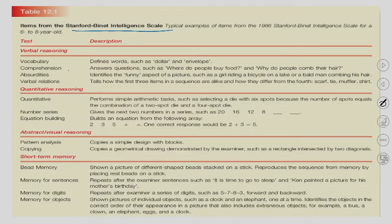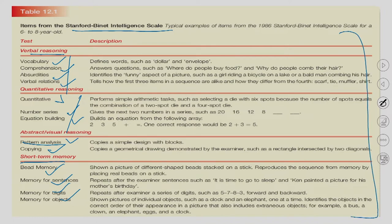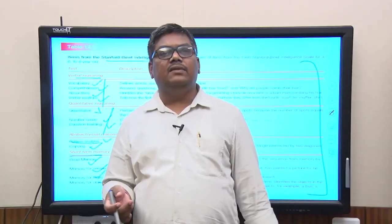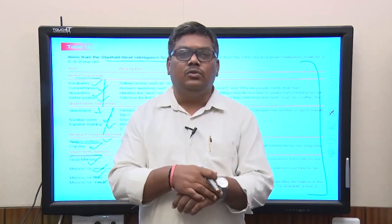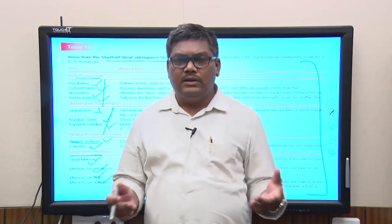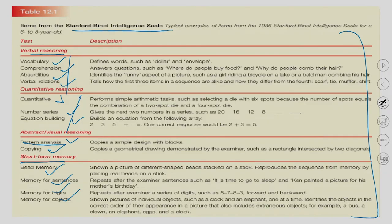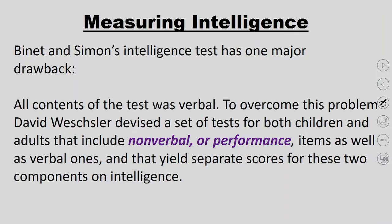The Stanford-Binet intelligence test is a typical example. It has verbal reasoning — vocabulary questions, comprehension, absurdities, verbal relations — as well as quantitative questions such as number series and equation building, abstract reasoning questions like pattern analysis and copying, and short-term memory questions such as bead memory, memory for sentences, digits, and objects. However, this test is essentially an academic test requiring verbal and reading/writing skills. The problem is there are people in the world who have never gone to school and have no verbal skills. Are they unintelligent? Their intelligence cannot be measured through any of these items — that was one of the major drawbacks of the Binet-Simon test.